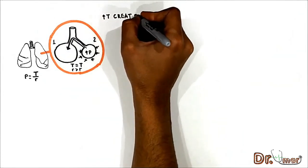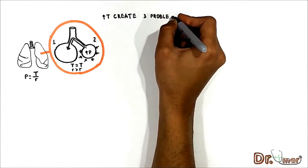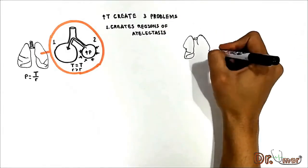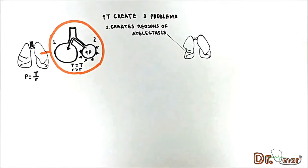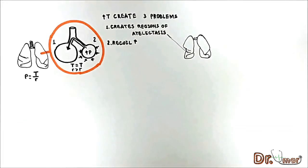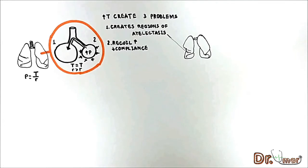To sum up, increased surface tension forces create three problems. First, it creates regions of atelectasis, because small alveoli have a great tendency to empty into large alveoli and collapse. Second, lung recoil increases — when the recoil force trying to collapse the lung increases, this leads to decreasing compliance, because the surface tension forces collapse the alveoli and it would be very difficult, if not impossible, to expand such a lung.